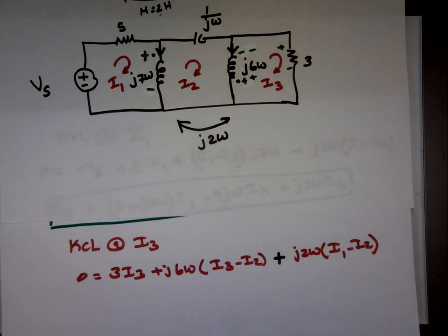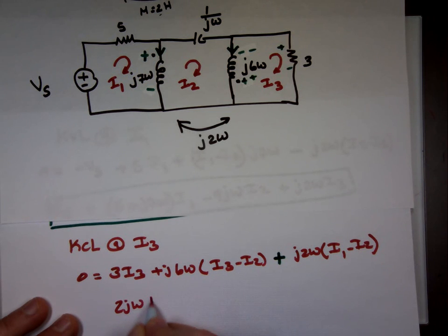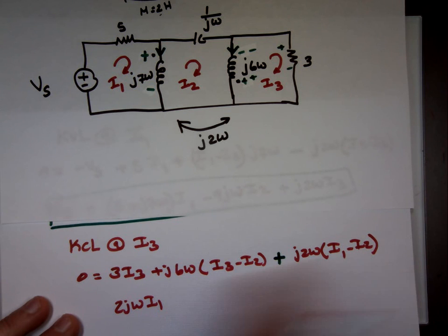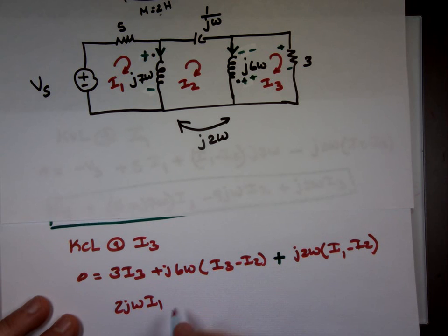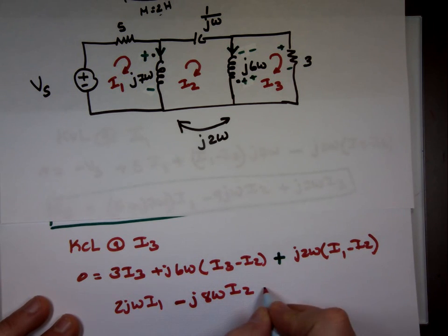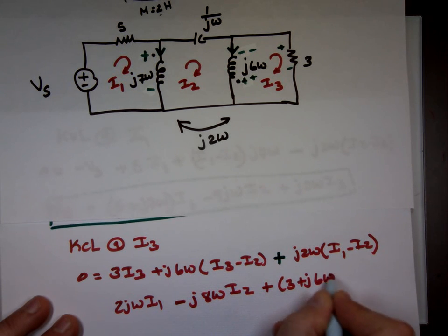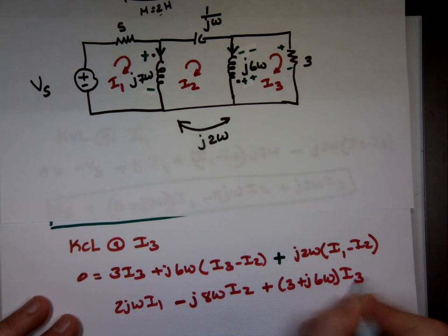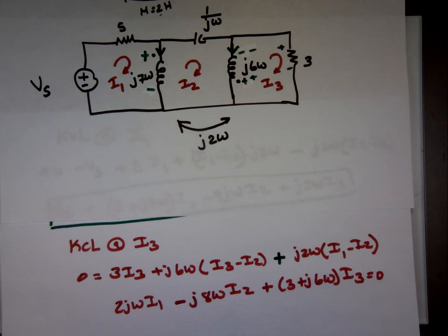Cleaning that up: (j2ω)·I_1 + (−j6ω − j2ω)·I_2 + (3 + j6ω)·I_3 = 0, which gives j2ω·I_1 − j8ω·I_2 + (3 + j6ω)·I_3 = 0. That's equation number three.